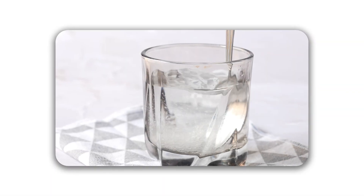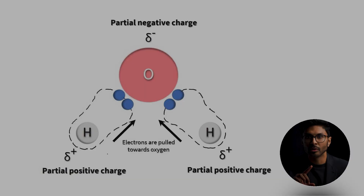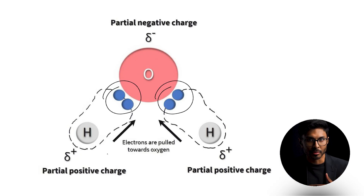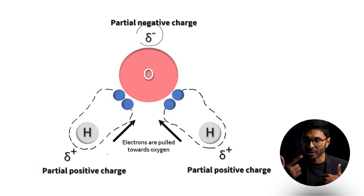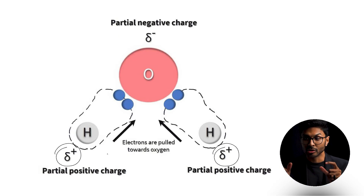To understand solubility in water, let's revisit what we know about water being a polar molecule. Because of the electronegativity of oxygen, which pulls negative electrons in the bond towards itself, water has a permanent dipole — oxygen has a slight negative charge and the hydrogens have a slight positive charge. This means water molecules act like tiny magnets, able to interact with other charged or polar substances nearby.